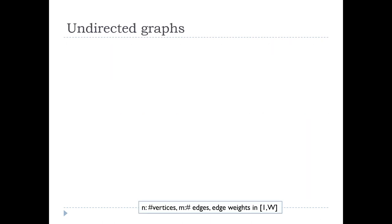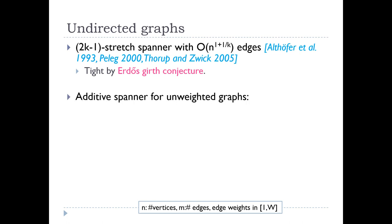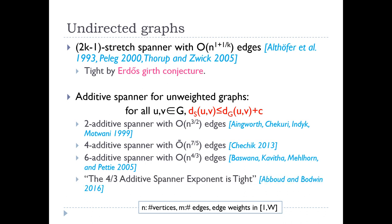There are many results on spanners in undirected graphs. There is the 2k-1 stretch spanner with O(n^{1+1/k}) edges. The tradeoff between stretch and size of the spanner is tight by Erdős's conjecture. There are also additive spanners for directed unweighted graphs, and the +4/3 additive spanner is shown to be tight. Here n is the number of vertices.